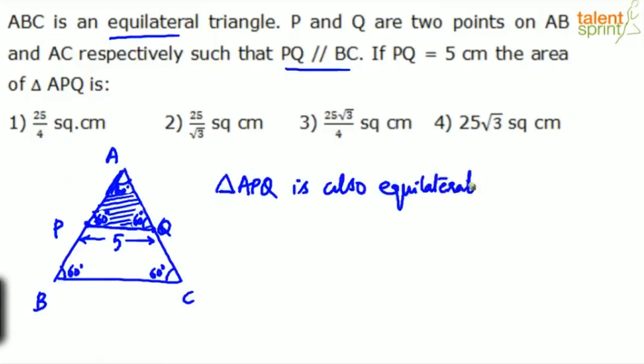And it need not be concluded by drawing a diagram. You can understand if one line is parallel to the base there, obviously the upper triangle will also be equilateral.